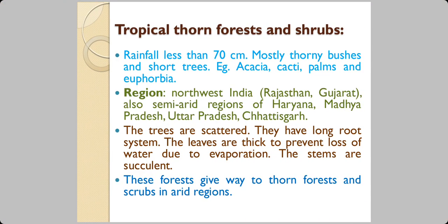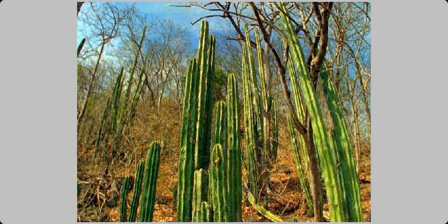In areas with rainfall less than 70 cm per year, we have thorn forests and shrubs — short trees, thorny bushes, a variety of cactus, palm, acacia, and euphorbia. Rajasthan, Gujarat, parts of Haryana, and Madhya Pradesh are examples of such areas. The trees are scattered and have long root systems with the ability to collect water from great depths, and the stems are succulent, holding a lot of water.